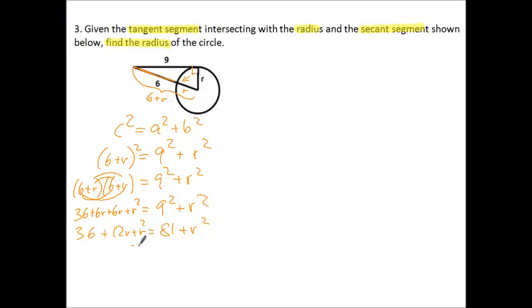Fortunately, we can subtract R squared from both sides, and it's gone. So we got 36 plus 12R is equal to 81.